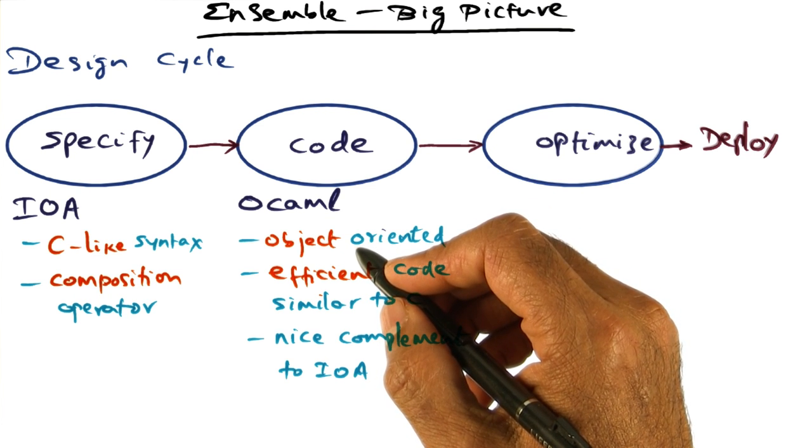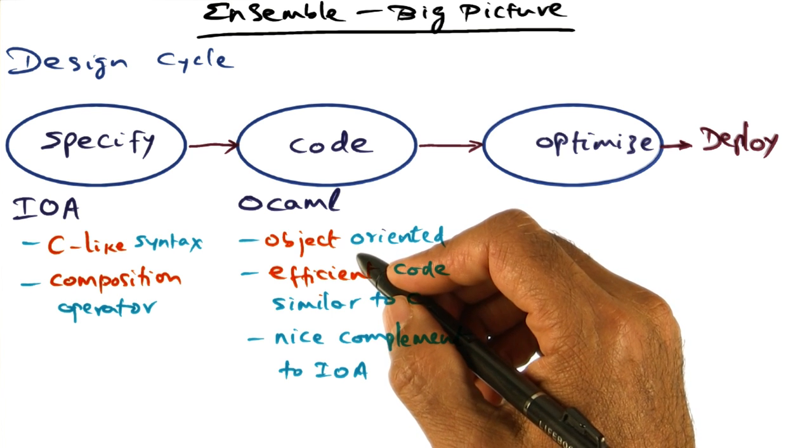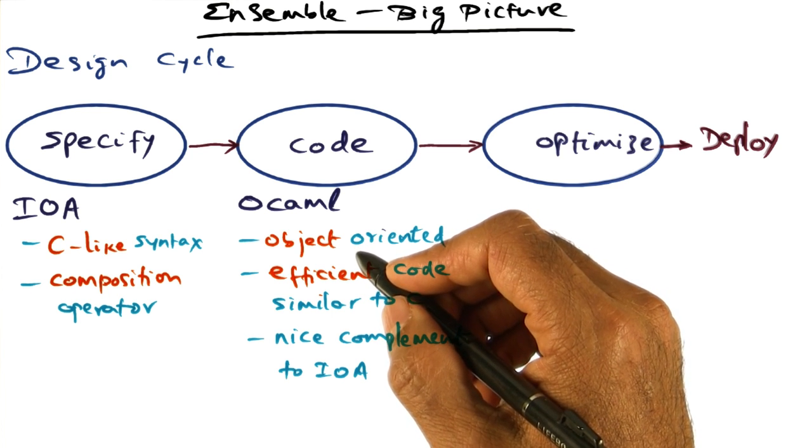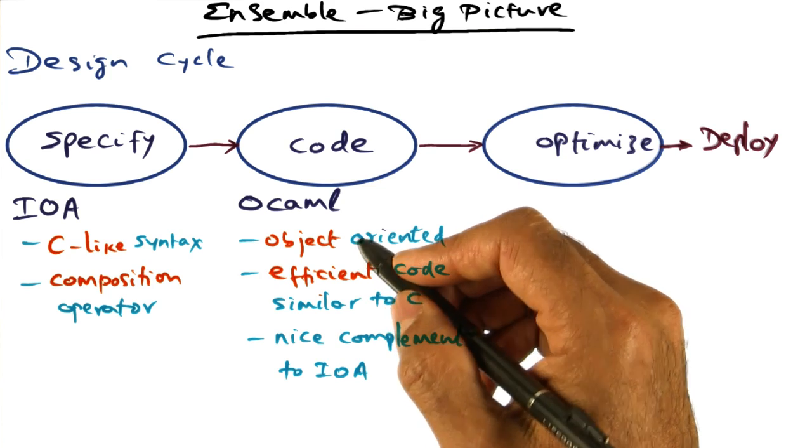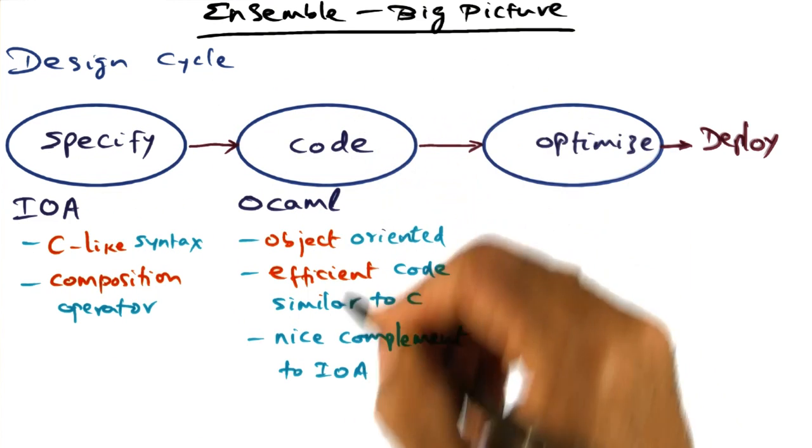this comes from the fact that OCaml is a functional programming language. So some of the properties of the functional programming language, including no side effects and so on, make this an appropriate vehicle to convert the specification into code.